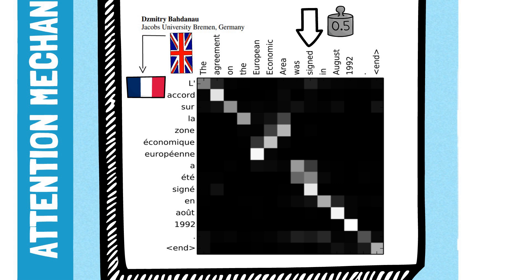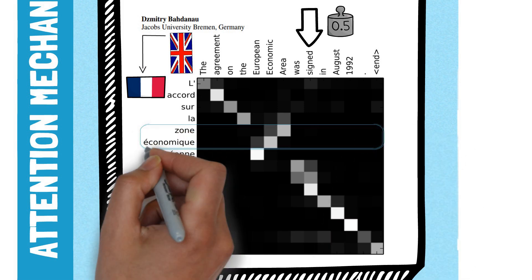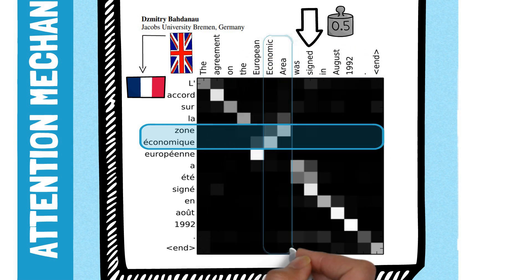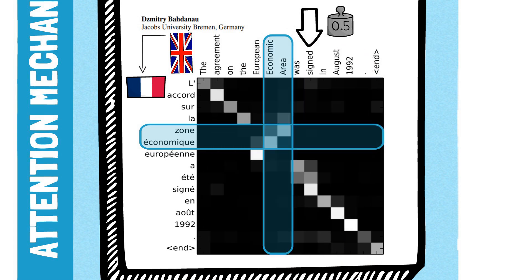For example, to translate economic area, the model learned to pay attention to the English words area and economic, even though they are in a different order.